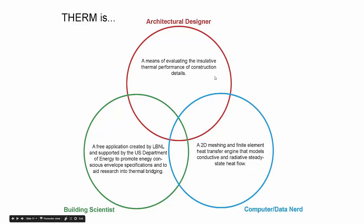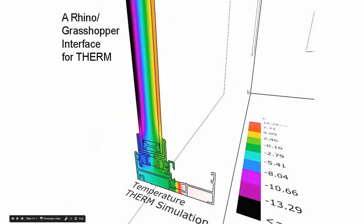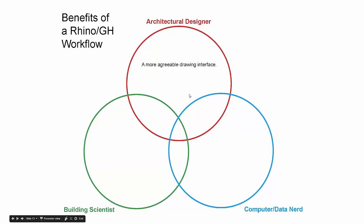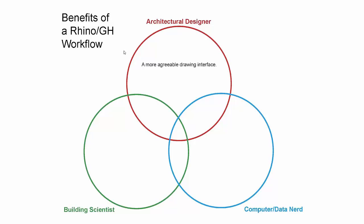What exactly are the benefits we get from this Rhino, Grasshopper, and Therm connection? From the architectural standpoint, one of the biggest benefits that Honeybee provides between Rhino, Grasshopper, and Therm is that we get a much more agreeable or more familiar drawing interface in order to create our construction details.